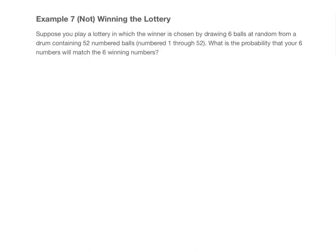In this video we will consider the connections between probability and coincidence. Let's consider an example of an event that many people consider to be coincidental, which is winning the lottery. We have a lottery in which the winner is chosen by drawing six balls at random from a drum containing 52 numbered balls, numbered 1 through 52.